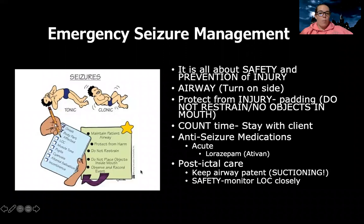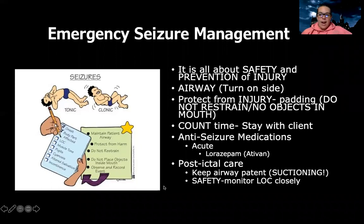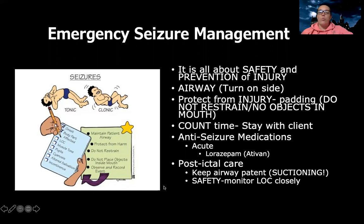So what do I do when a patient's having a seizure or status epilepticus? It's all about safety and prevention of injury. First, I want to protect their airway — usually I want to turn the patient on their side. We do not want to restrain them and do not want to put any objects in their mouth. If they're in bed, that's why we have patients on seizure precautions with the bed padded on both sides. And one of my most important roles as the nurse is documenting — when did it start, how long did it last, what did it look like — to best report to the doctor.